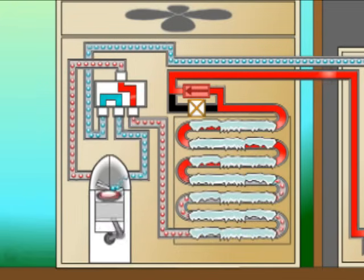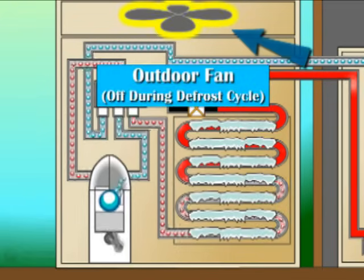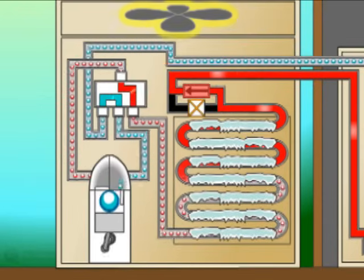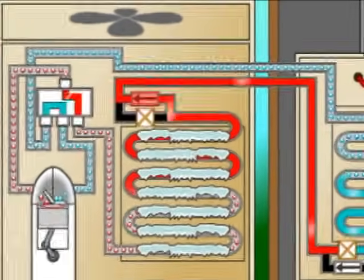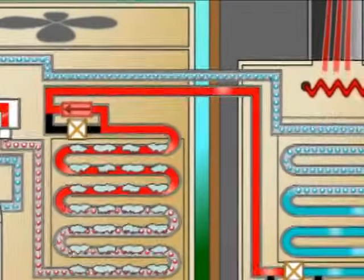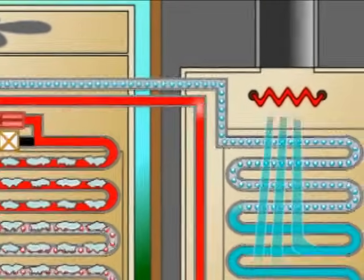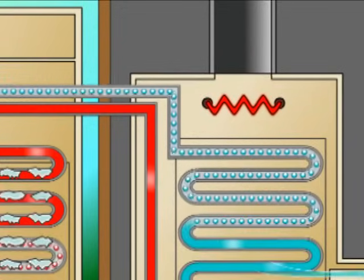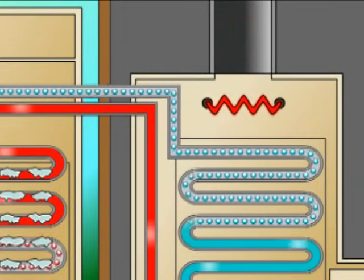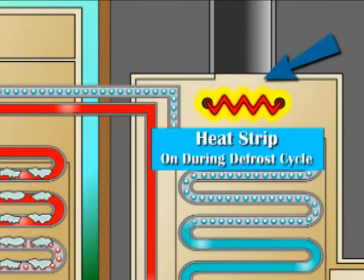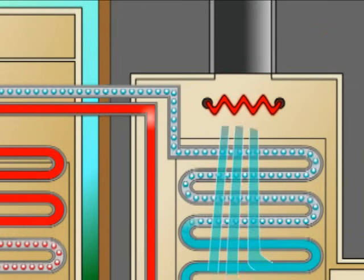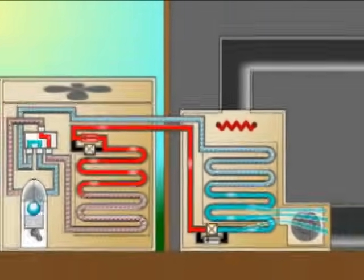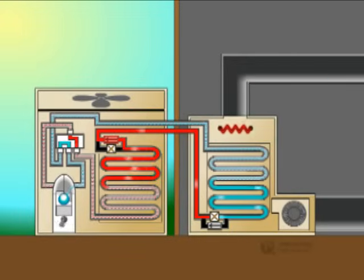To speed this process up, outdoor fan operation is terminated throughout the defrost cycle. Also notice that the indoor air stream, now being robbed of its heat, becomes very cold, which is not a desirable condition during winter. To compensate for this condition, the auxiliary heat is activated for the duration of the defrost cycle. After a few minutes, the outdoor coil is frost free and the defrost cycle is terminated.